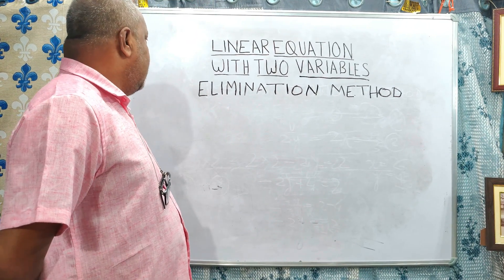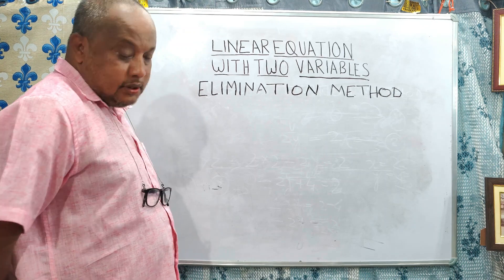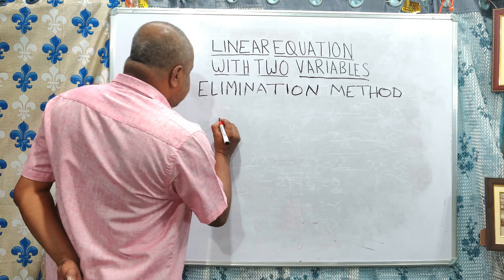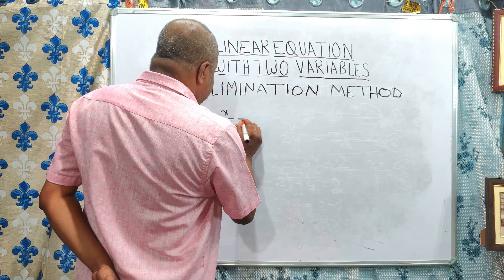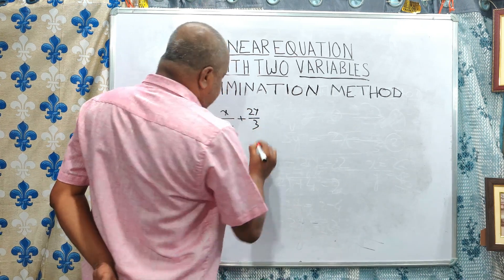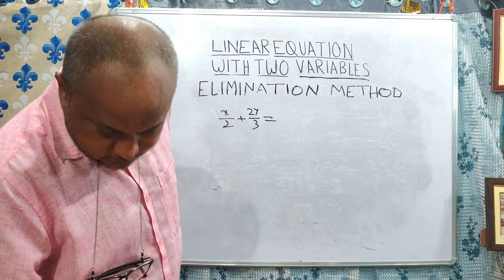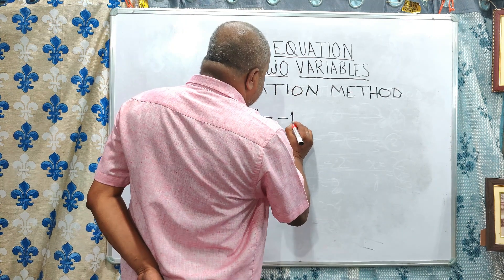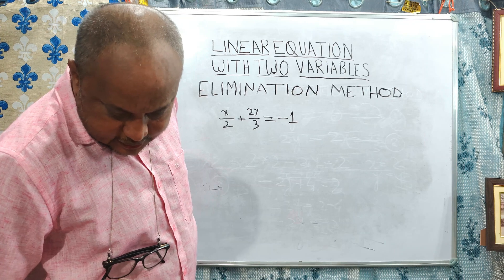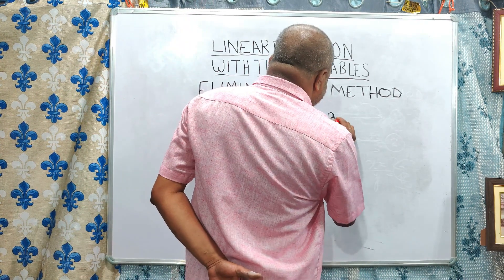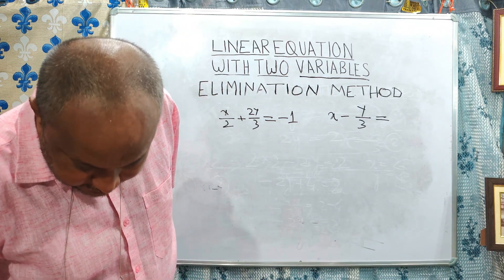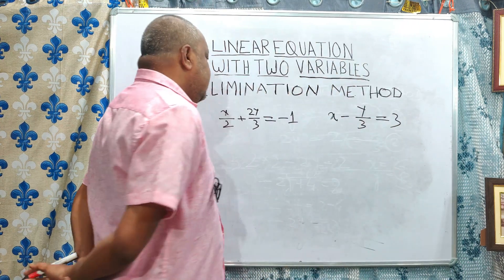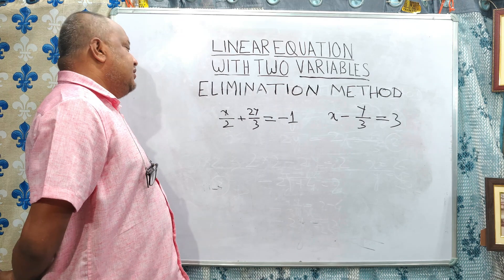Now I am going to solve another problem of linear equations with 2 variables by elimination method. Let us consider the equation x by 2 plus 2y by 3 is equal to minus 1. And another equation: x minus y by 3 is equal to 3. These two equations need modification first.